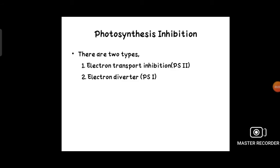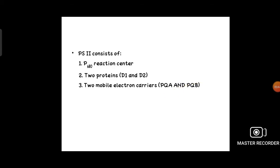There are two types of photosynthesis inhibition: electron transport inhibition which occurs in photosystem II, and electron diverter which occurs in photosystem I. Photosystem II consists of P680 reaction center having two proteins—D1 and D2—and two mobile electron carriers, that is plastoquinone A and plastoquinone B.